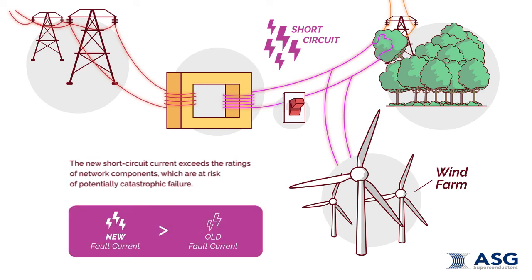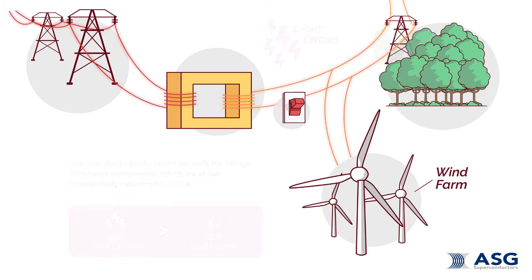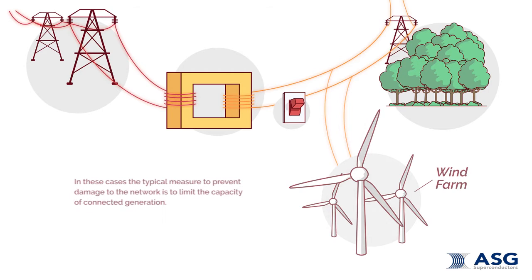When the increased fault level exceeds the ratings of the network components, they are at risk of potentially catastrophic failure. In these cases, the typical measure to prevent damage is to restrict the capacity of connected generation.